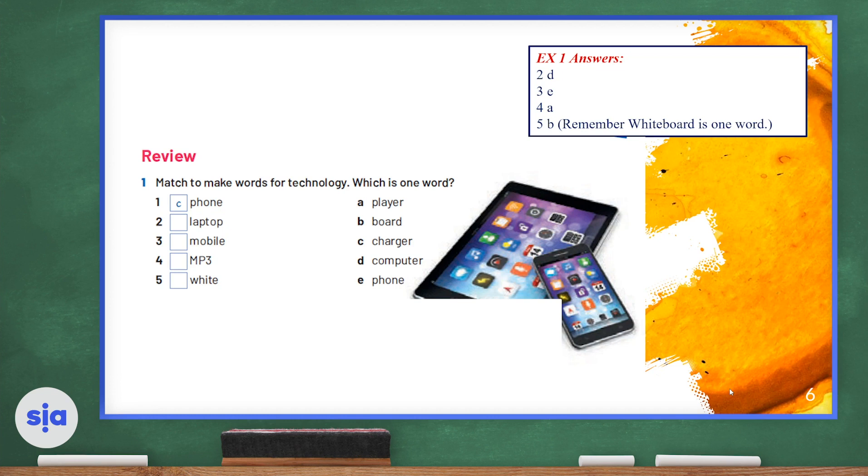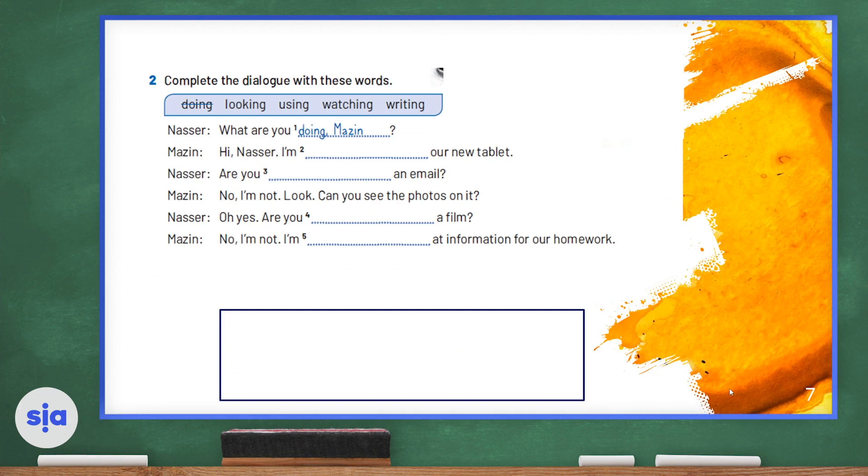Now I'd like you to complete the dialogue with these words. This is a conversation between Nasir and Mesin, and we're going to fill in the blanks with the correct words. Nasir: 'What are you doing?' Mesin: 'Hi Nasir, I'm using our new tablet.' 'Are you writing an email?' 'No, I'm not. Look, can you see the photos on it?' 'Oh yes, are you watching a film?' 'No, I'm not. I'm looking at information for our homework.' These are all verbs in the present continuous tense, so make sure you use those correctly when we're speaking about something that is happening now.